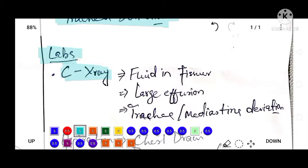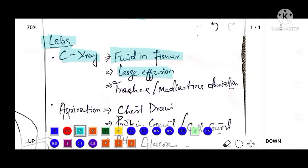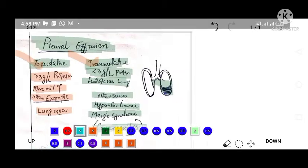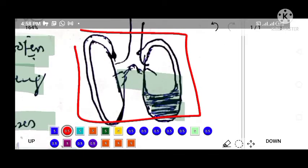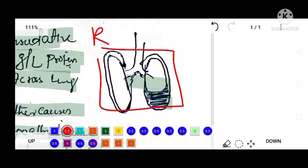Investigations will be chest x-ray, which shows fluid in the fissures. If there is large effusion, then the trachea and mediastinum will be deviated. Let's suppose this is an x-ray—this is the right side and this is the left side. If there is massive effusion here, then the trachea will be deviated to the opposite side, to the right side.